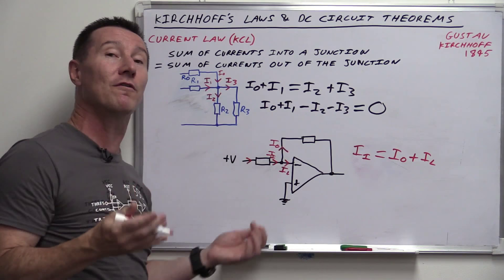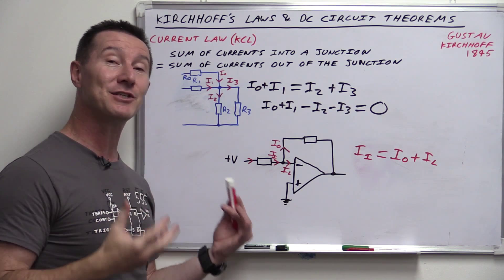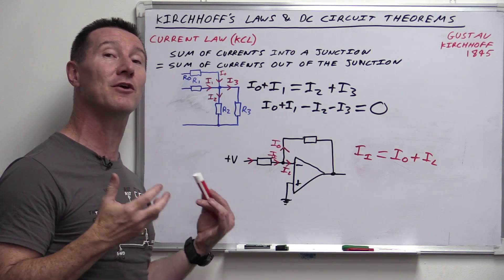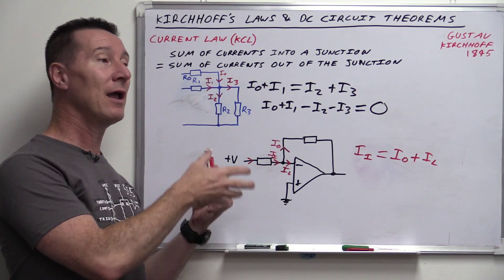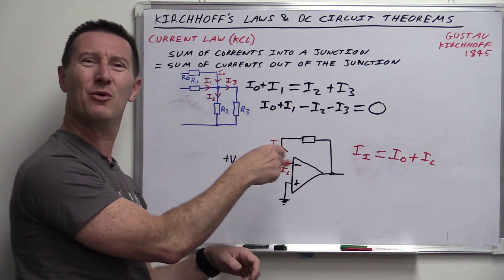You'll notice I called currents going into the junction positive and those coming out negative, but that doesn't have to be the case. You can make them positive or negative — it makes no difference as long as you're consistent. We'll actually see this further on in the video where we can get negative results, which tells us something fundamental about the circuit we're trying to analyze. So that's it — current in equals current out.